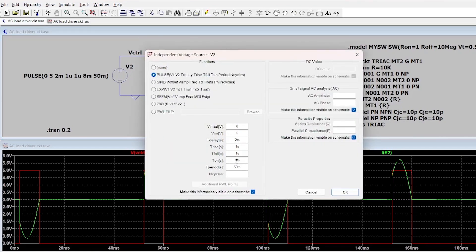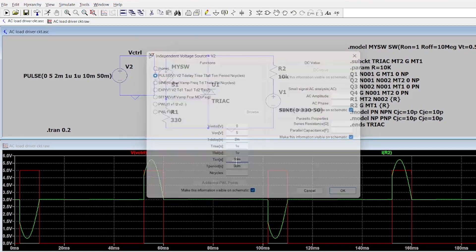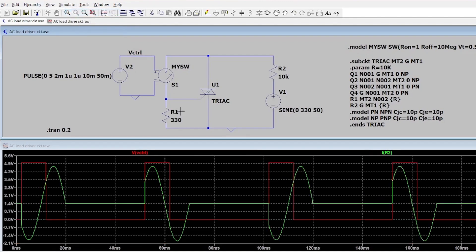It means even if I remove the pulse after turning on the triac it will still remain on until the next zero crossing.